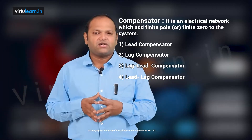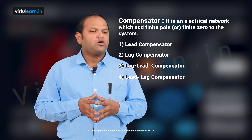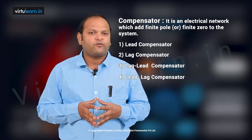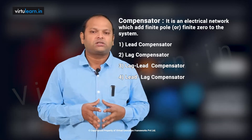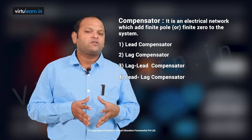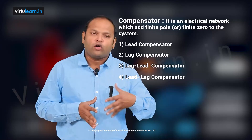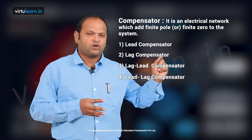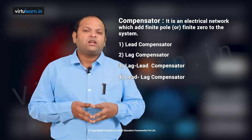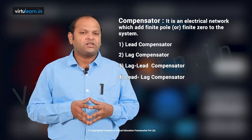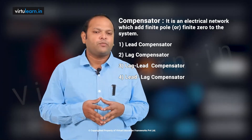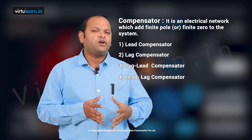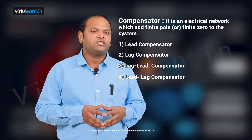A compensator is basically an electrical network which adds a finite pole or finite zero to the system, so that the system performance is changed according to the requirement by adjusting the poles and zeros. There are three types of compensator systems generally available: lead compensator, lag compensator, and lag-lead compensator. There is also a lead-lag compensator which is not so common.